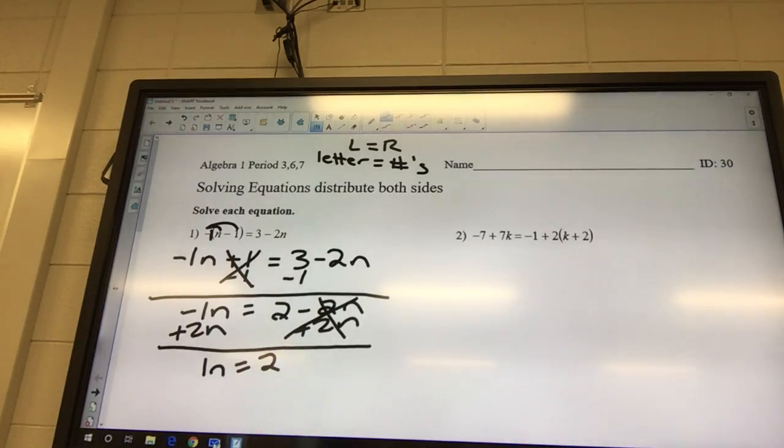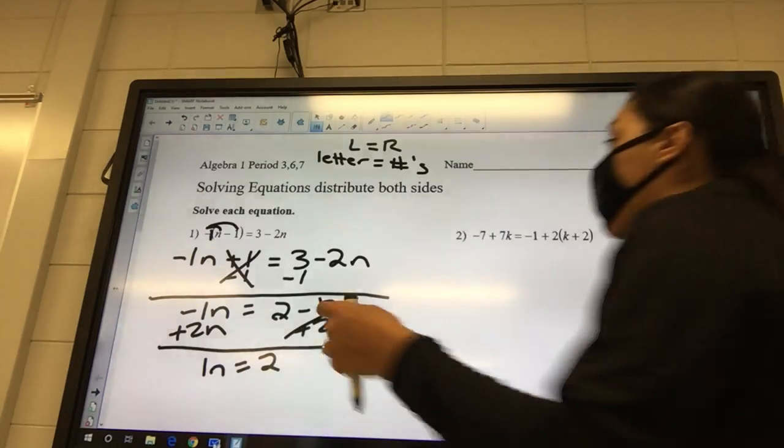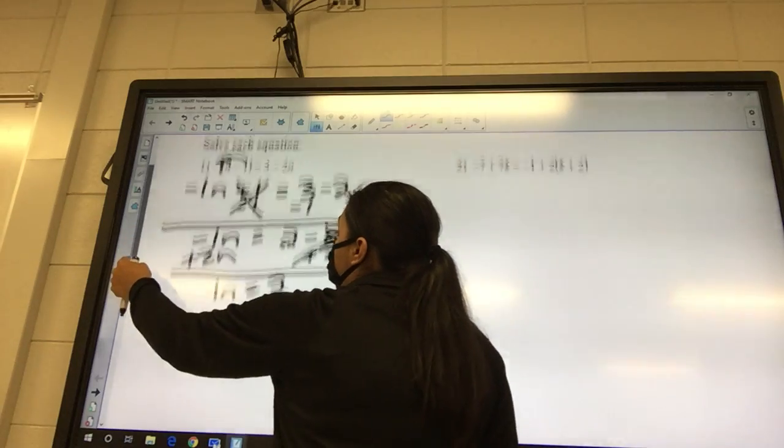If you feel like you need to divide by that one, you totally can. However, n and one n are the same, are they not? X and one x are the same. So you just end up with n equals two.